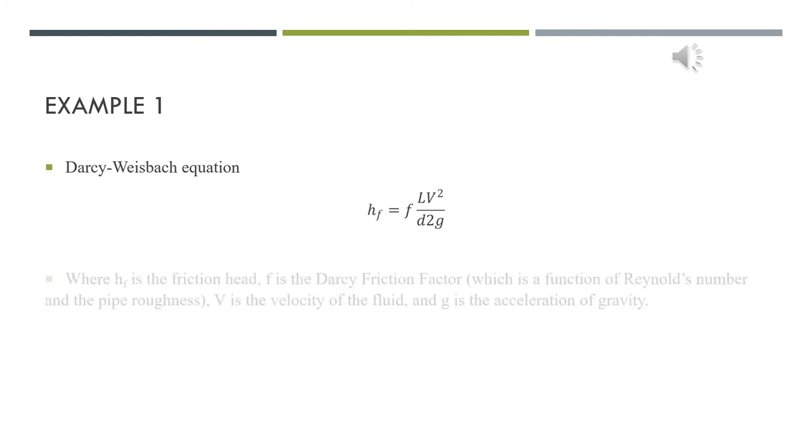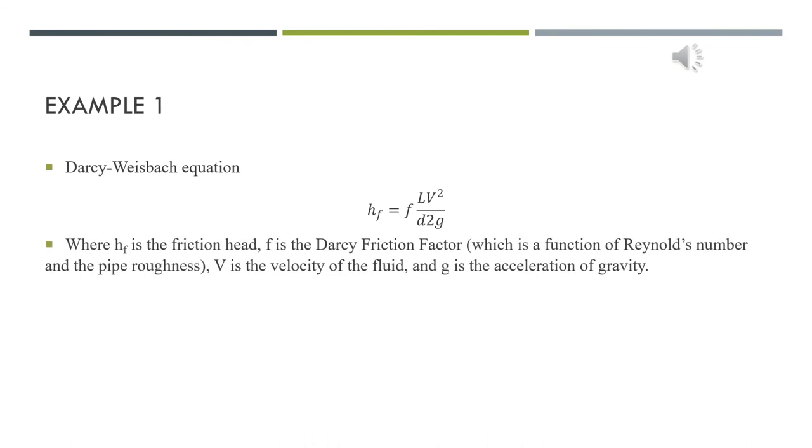Hello everyone, my name is Qin Junhao. I will present example and calculation for vane pump. In example 1, I wrote Darcy-Weisbach equation as shown below. The hf is the friction head. f is the Darcy friction factor, which is a function of the Reynolds number and the pipe roughness. V is the velocity of the fluid and g is the acceleration of gravity.